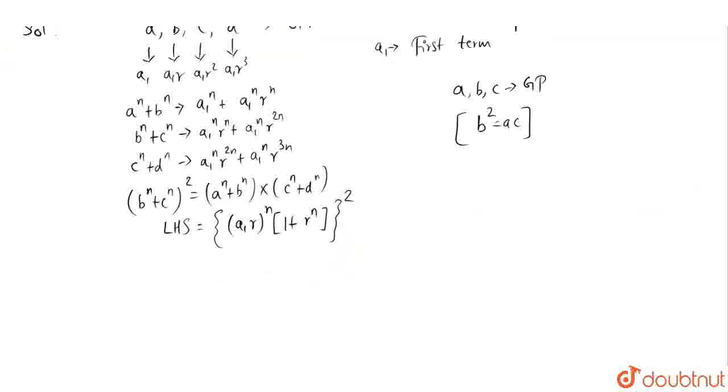Here, A1 power N into R power 2N will be common, and we are left with 1 plus R power N. This can be written as A1 power 2N into R power 2N into 1 plus R power N whole square.